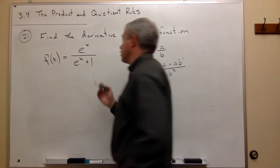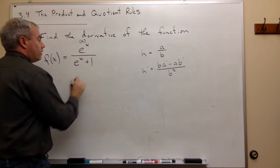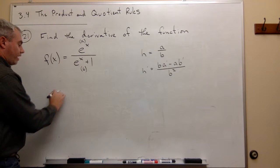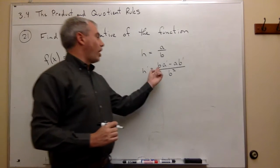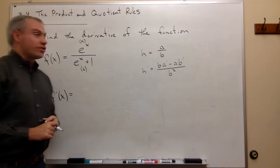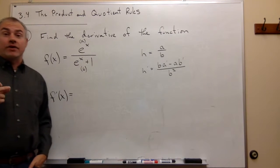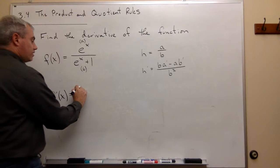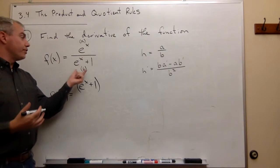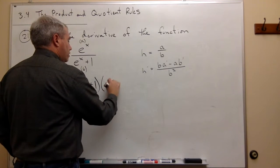So once we know that, let's go back. This function on top, we'll call this a. This function on bottom, this is b. So we've got that f prime of x is equal to the bottom times the derivative of the top minus the top times the derivative of the bottom over the bottom squared. What is on the bottom? The bottom is e to the x plus 1, so we just write that down first and do nothing to it. Then we write down the derivative of the top — the derivative of e to the x is e to the x.